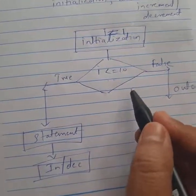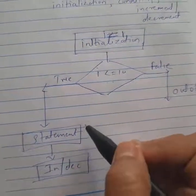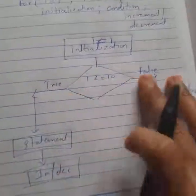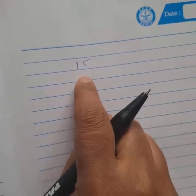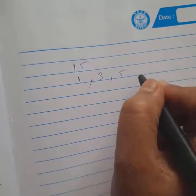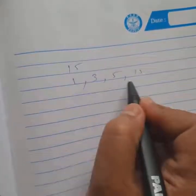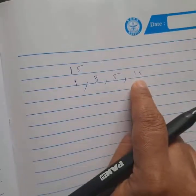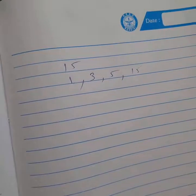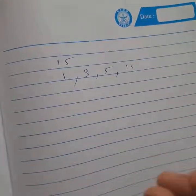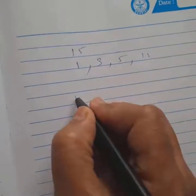Now let's take one example so you understand. We are writing a program to find the factors of a given number. Suppose the number is 15. The factors of 15 are 1, 3, 5, and 15, because 15 divided by each of these gives no remainder. Now let's see how to write this program to find the factor of any given number.